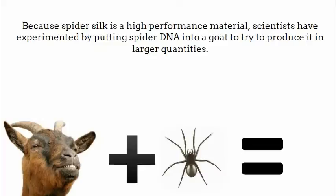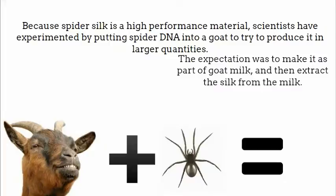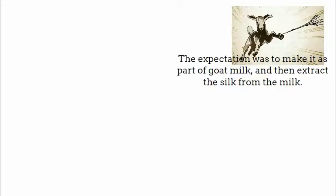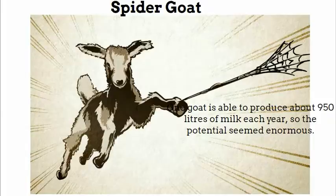Because spider silk is a high-performance material, scientists have experimented by putting spider DNA into a goat to try to produce it in larger quantities. The expectation was to make it as part of goat milk and then to extract the silk from the milk. One goat is able to produce 950 liters of milk each year, so the potential seemed enormous.